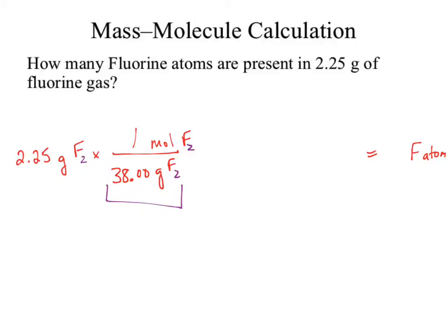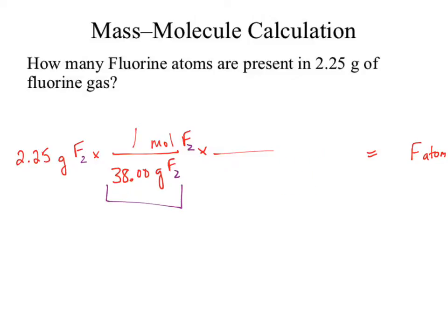We now have moles of F2 — but what do I want? Atoms. So I need to get rid of moles F2. Moles F2 on the bottom, and molecules of F2 on top via Avogadro's number: one mole of F2 equals 6.022 times 10 to the 23rd molecules of F2. But molecules of F2 is not my answer — I want atoms of fluorine. So molecules needs to show up on the bottom, and atoms on top. The relationship: two atoms per one molecule of F2, found in the balanced formula.